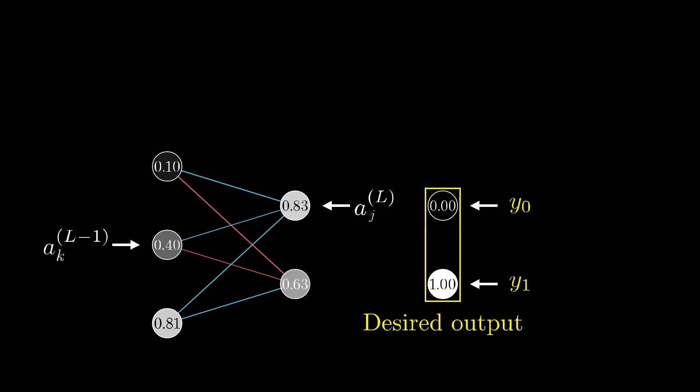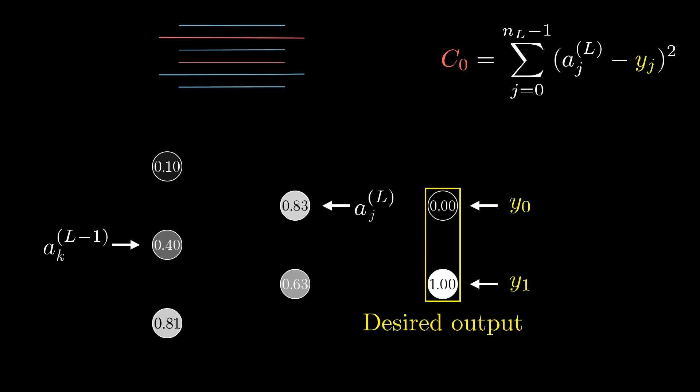For the cost, again we look at what the desired output is, but this time we add up the squares of the differences between these last layer activations and the desired output. That is, you take a sum over (a^l_j minus y_j) squared.